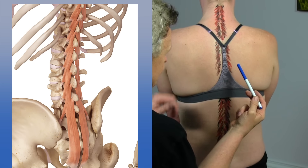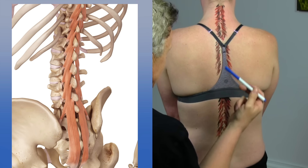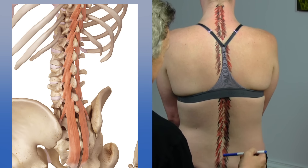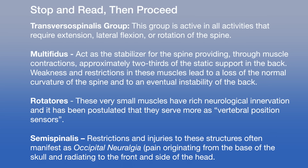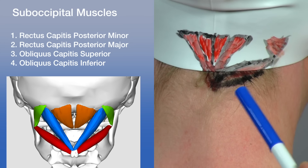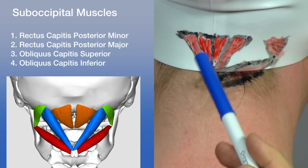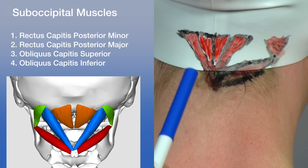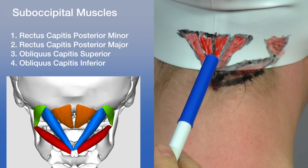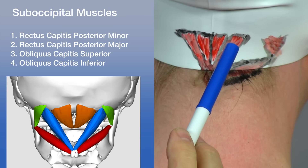The semispinalis muscles pass to the spinous processes of vertebrae located four to six levels above, covering other layers. So we have the rotatories oriented more horizontally, the multifidus at more of an angle, and the semispinalis more vertical. Viewed from behind, the transversospinalis forms what is called a chevron formation — an inverted V.